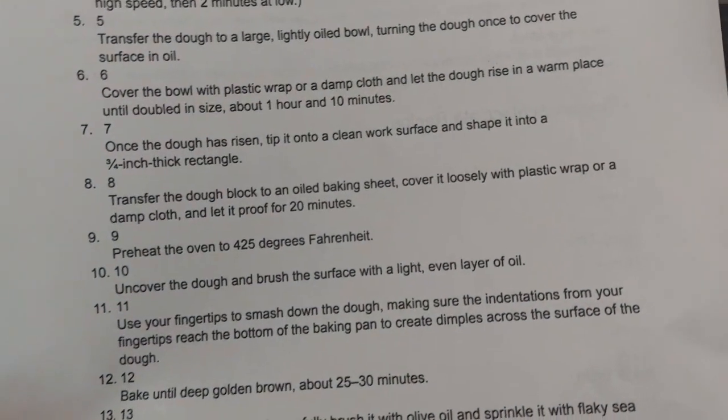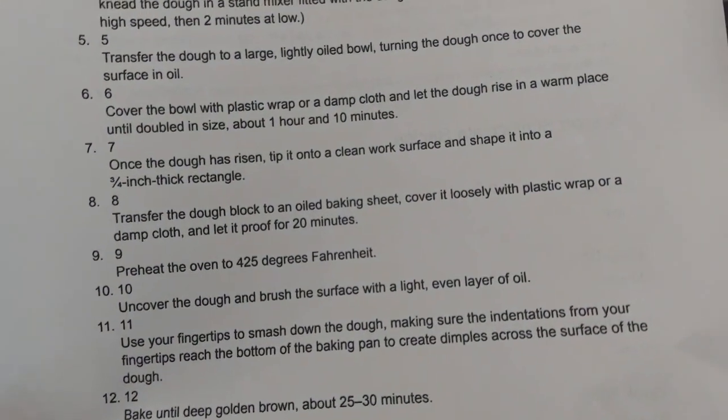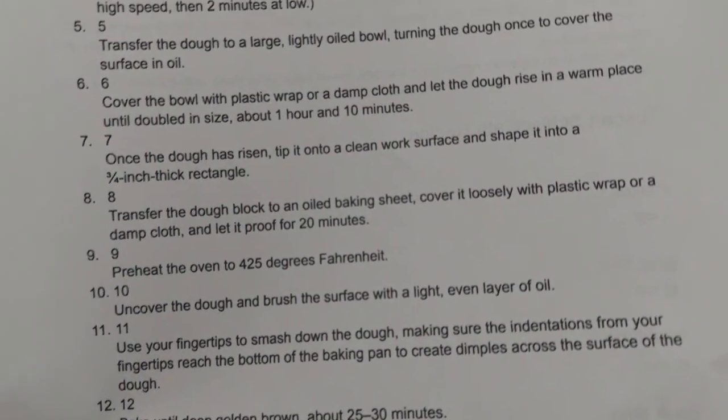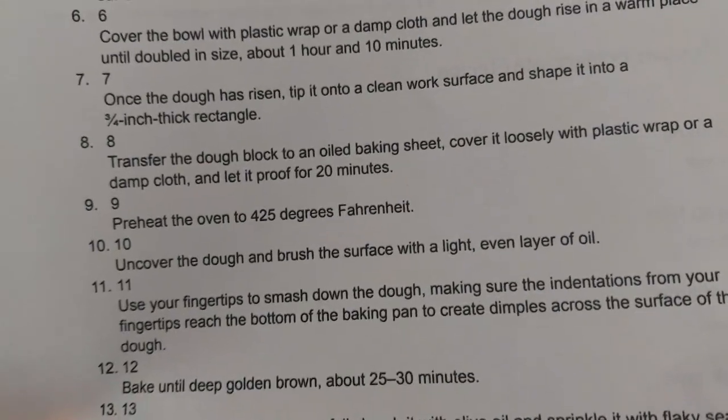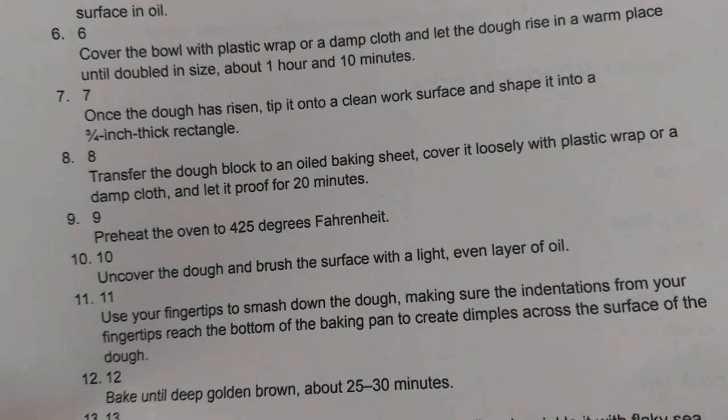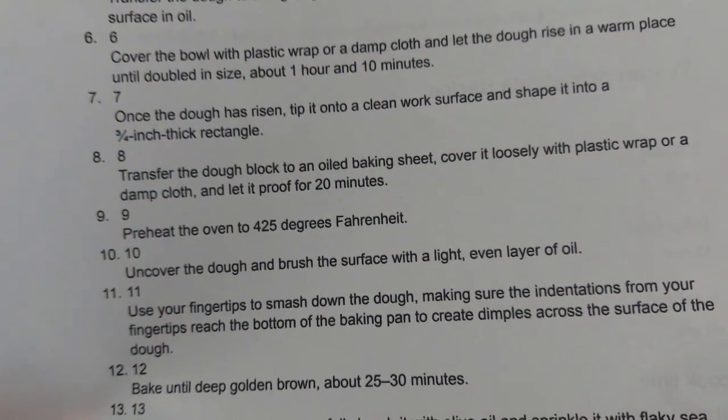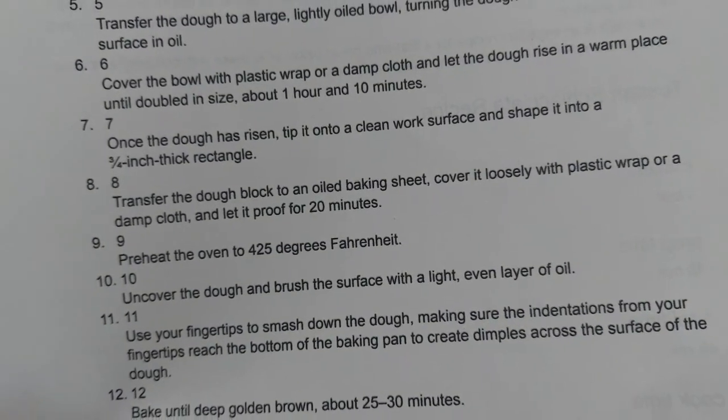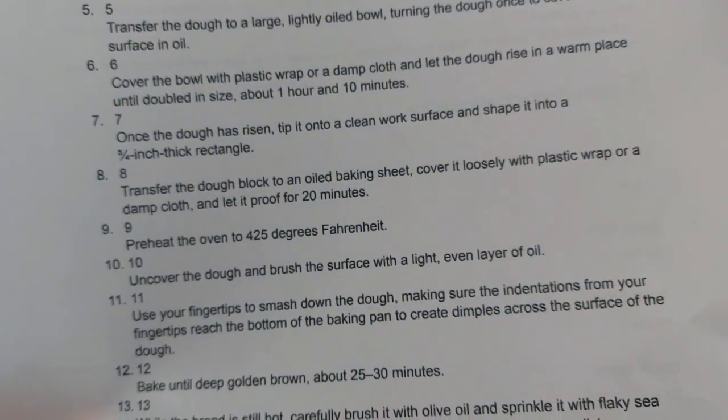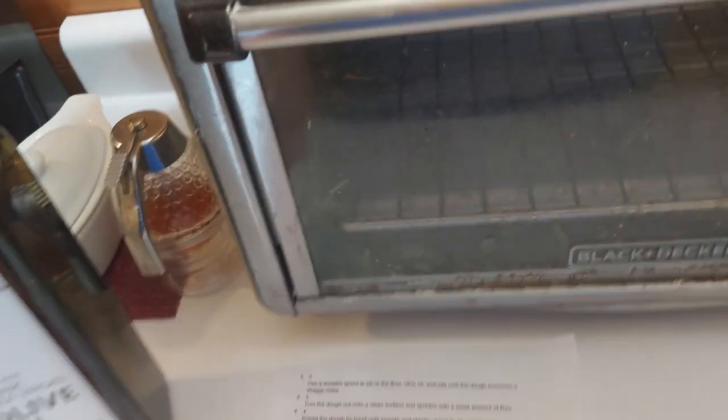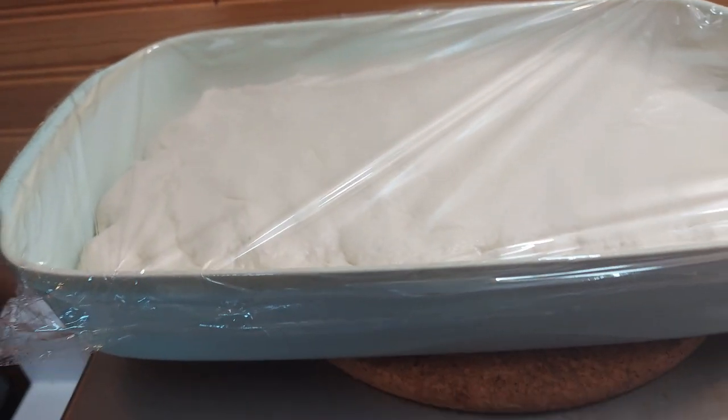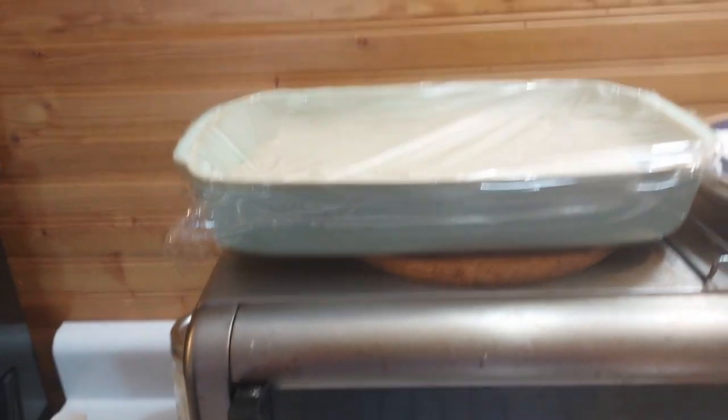So I put it in there and I'm on step number nine. I transferred it to an oiled baking sheet, covered it loosely with plastic wrap, got my timer on 20 minutes, and I turned my oven on to 425 to warm up. Then when it gets done I'll brush it with light oil, and I'll squish it down, and then I'll stick it in the oven and bake it.